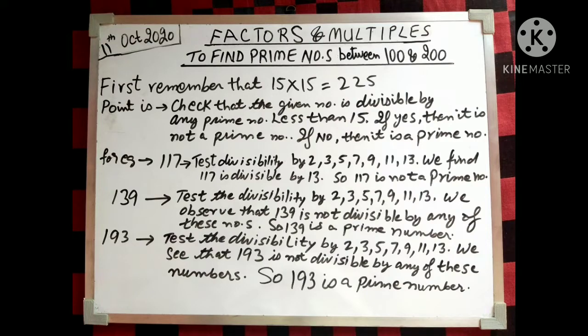As you can see on the board, I have written 15 × 15 = 225. This is the first important point to remember. We have to check whether the given number is divisible by any prime number which is less than 15. If it is divisible, then it is not a prime number, and if it is not divisible, then it is surely a prime number.